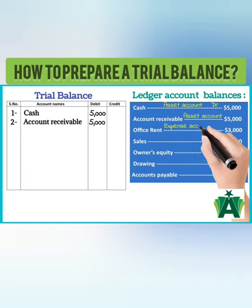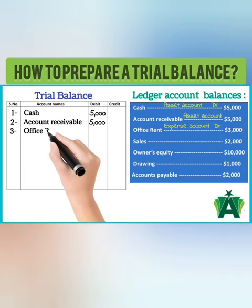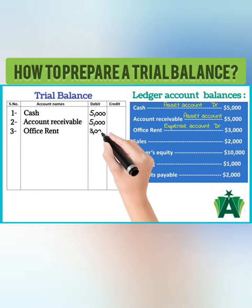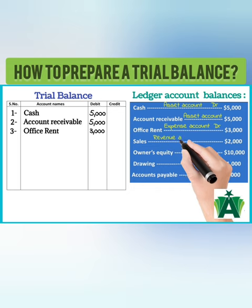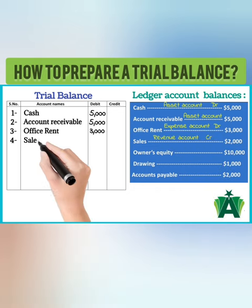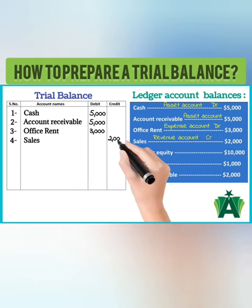Office rent is an expense account; it is recorded in the debit column of a trial balance. Sales is a revenue account; it is recorded in the credit column of a trial balance.